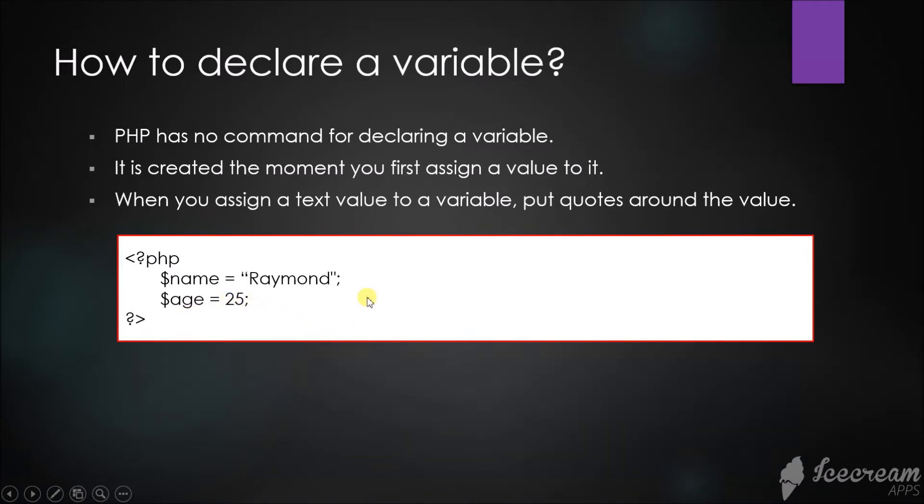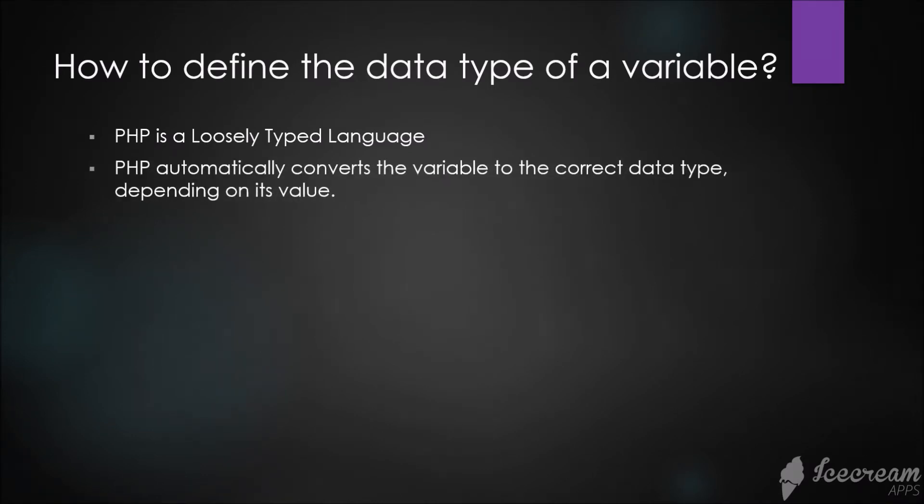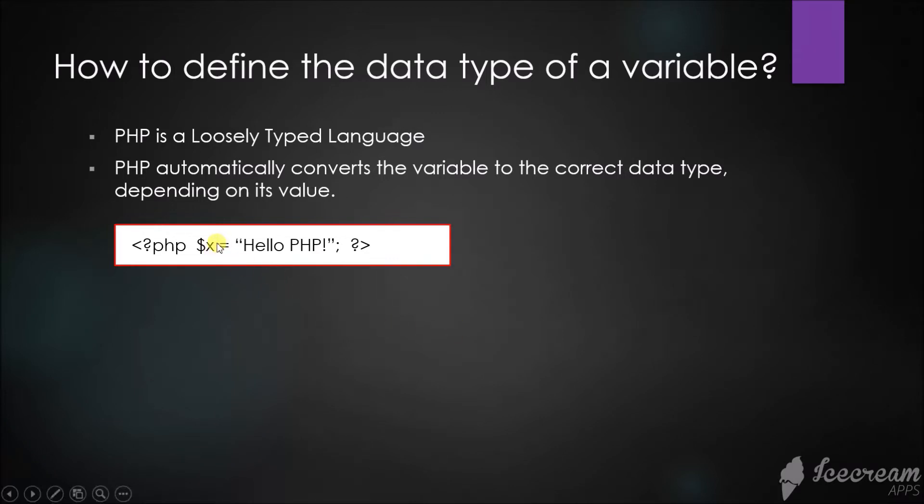How to define the data type of a variable? PHP is a loosely typed language. PHP automatically converts the variable to the correct data type depending on its value. If variable x equals 'Hello PHP' in quotes, the data type of that variable will be string.